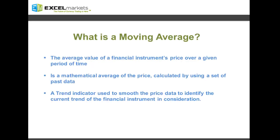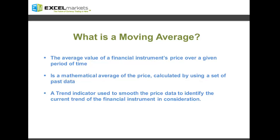The first question we address is: what is a moving average? Moving average, as the name suggests, is the average value of a financial instrument's price over a given period of time. It is a mathematical average of the price calculated by using a set of past data. Moving average is considered as a trend indicator used to smooth the price data and identify the current trend of the financial instrument being traded.